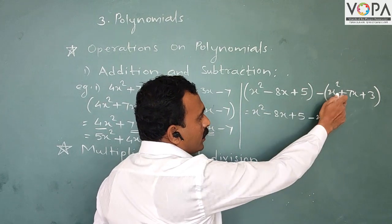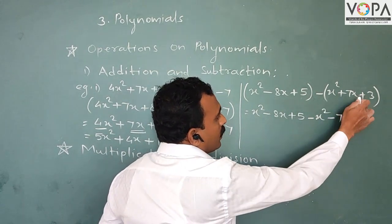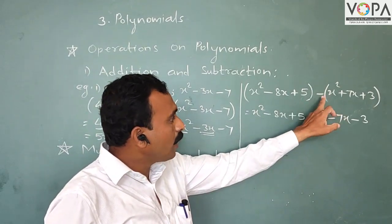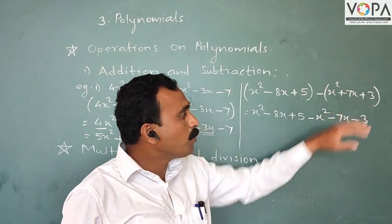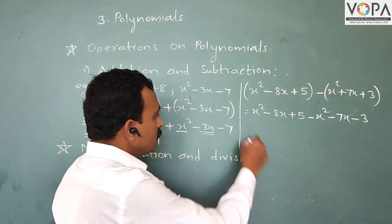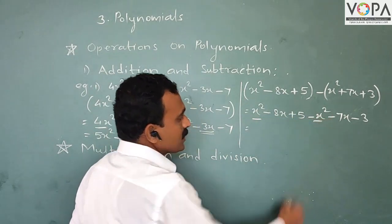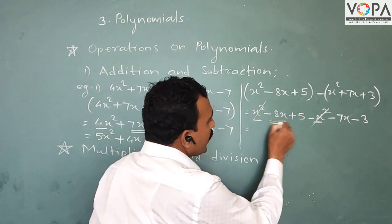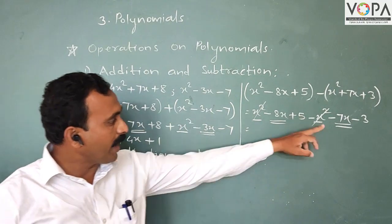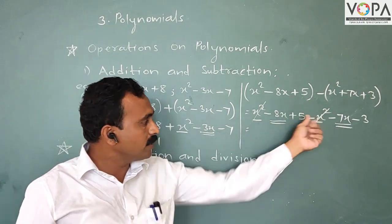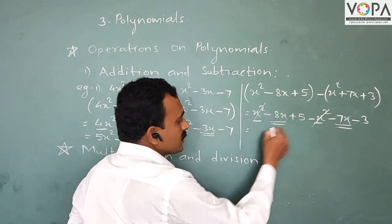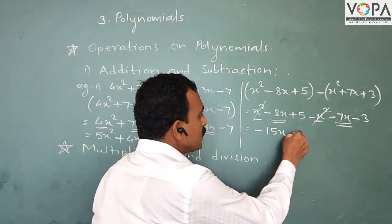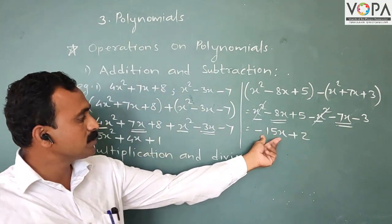So positive x² becomes -x², -7x becomes the next term, and +3 becomes -3. If the sign outside the bracket is negative, then do the opposite sign of each term. Now like terms: x² and -x² — opposite signs of the same numbers cancel. Then -8x and -7x are both negative, so add them: -8 - 7 = -15x. Now +5 and -3: +5 - 3 = +2. The answer is -15x + 2.